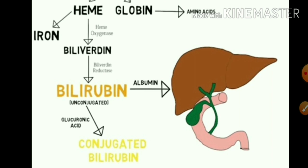Bilirubin mixes with albumin and goes to the liver. The liver produces conjugated bilirubin. Conjugated bilirubin uses glucuronic acid. This is how bilirubin becomes conjugated. Unconjugated bilirubin is not water-soluble, whereas conjugated bilirubin is soluble. Glucuronic acid mixes with bilirubin in the liver to make it conjugated.